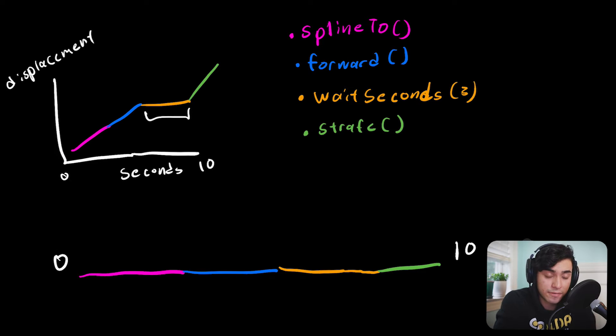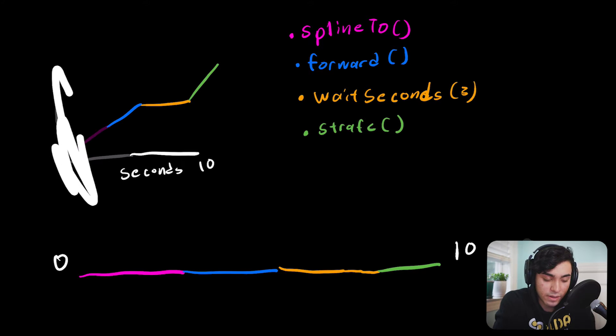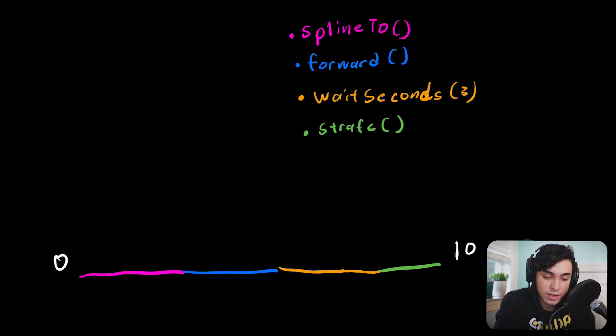And this is the same with turn. If you were to replace wait seconds with a turn 45 degrees, the bot isn't moving. It turns in place. So we don't need this graph anymore. That was fairly, that was explanation. So how does that affect markers?